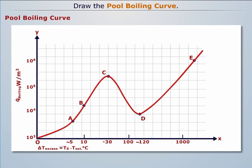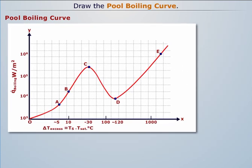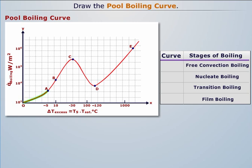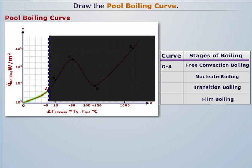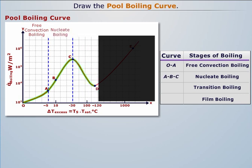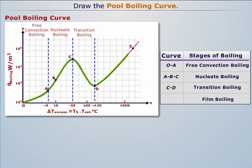The curve O-A-B-C-D-E is known as the pool boiling curve of water. Curve OA represents the stage of free convection boiling, curve ABC represents the stage of nucleate boiling, curve CD represents the stage of transition boiling, and curve DE represents the stage of film boiling. Now let's understand each section of the curve one by one.